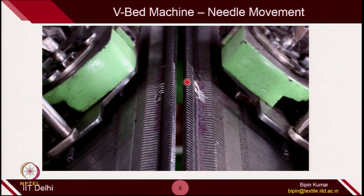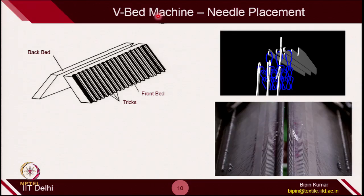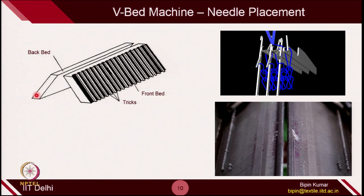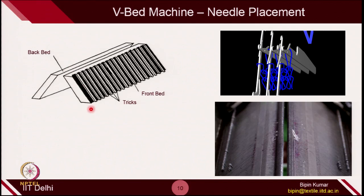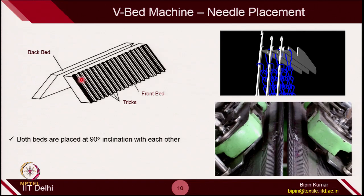You might have observed that when these 2 needles were going up simultaneously, they are not striking each other. There are 2 features which are very important in terms of needle placement on a V bed machine. The first feature is that these 2 beds are not placed in a horizontal plane — they are placed in a certain vertical plane. You can see they are placed in a different plane. The nature of their placement results in a kind of V shape. That's why this type of machine is called V bed machine. Both beds are placed in a V shape, and the angle between the 2 sides of the V is usually 90 degrees — 90 degree inclination with each other.